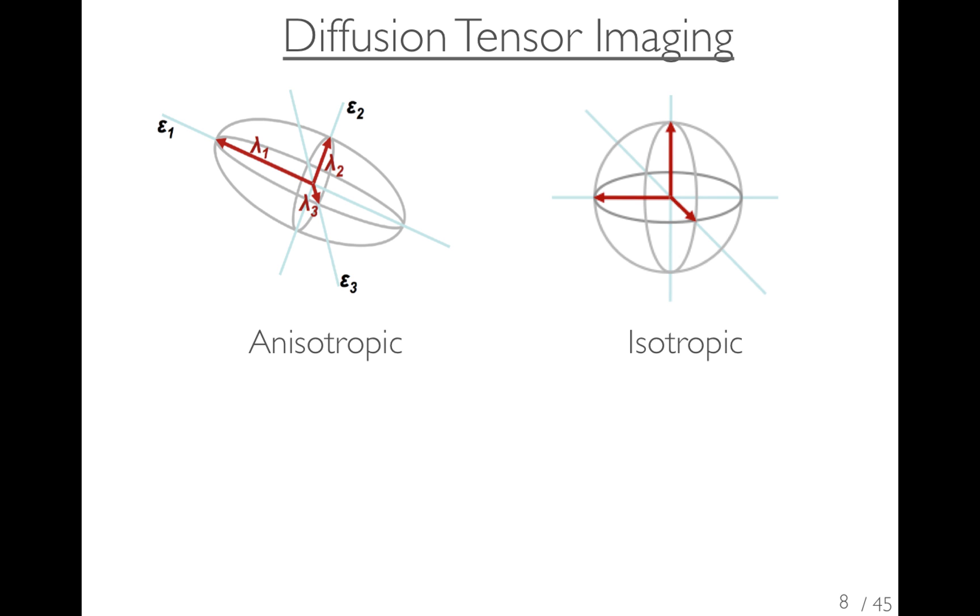Diffusion tensor imaging is a technique to model the diffusion, this non-sphericalness of the diffusion profile. The more non-spherical it is, we describe that as a more anisotropic diffusion profile. And one that is more spherical we would describe as an isotropic diffusion profile.